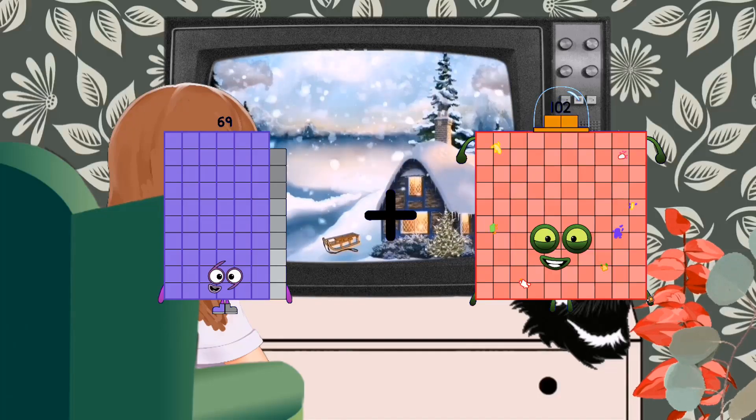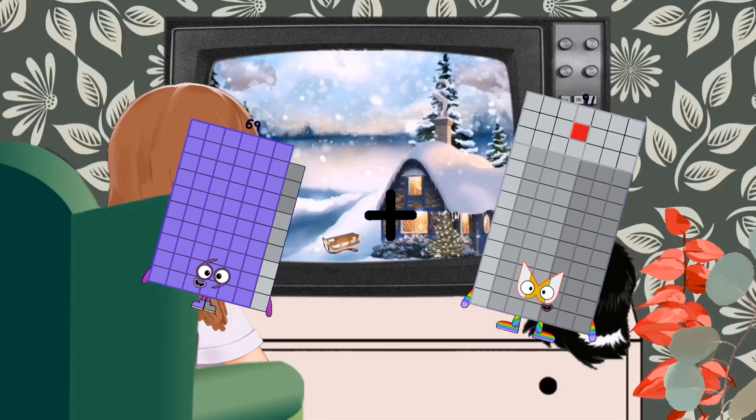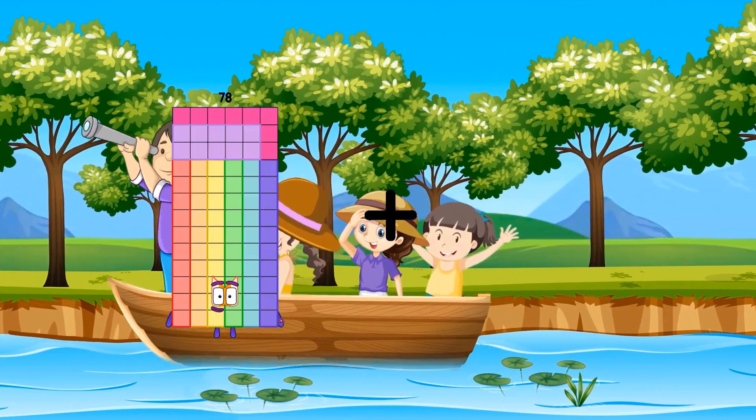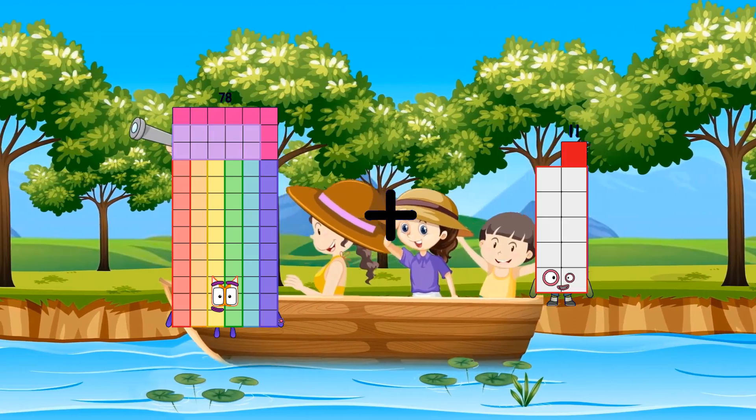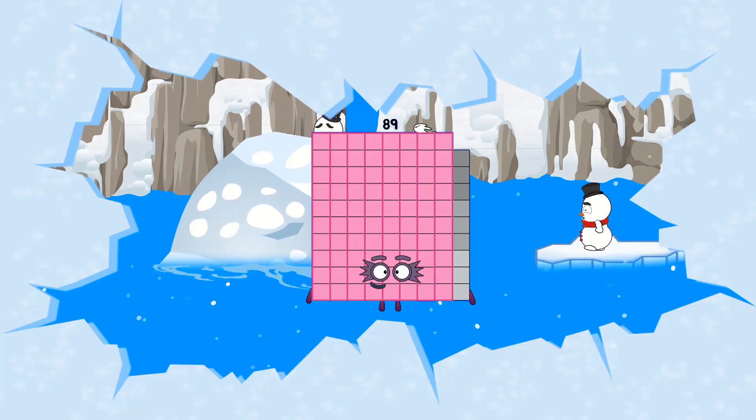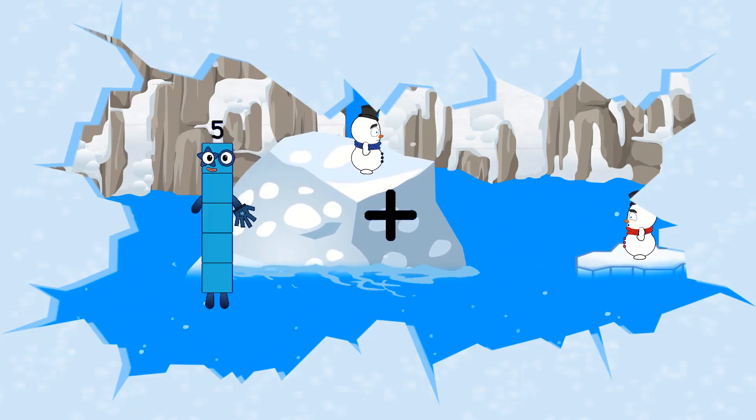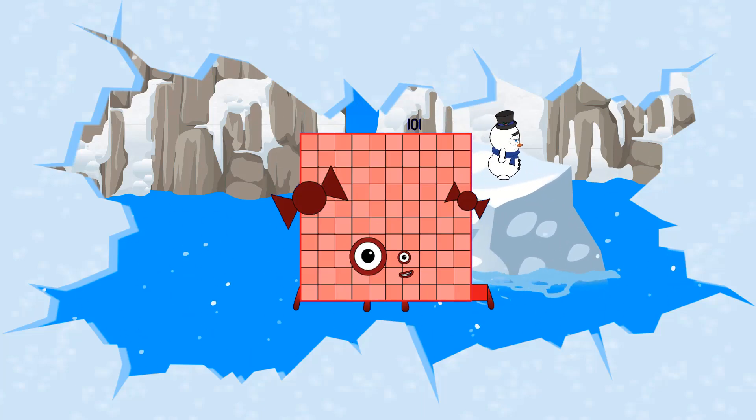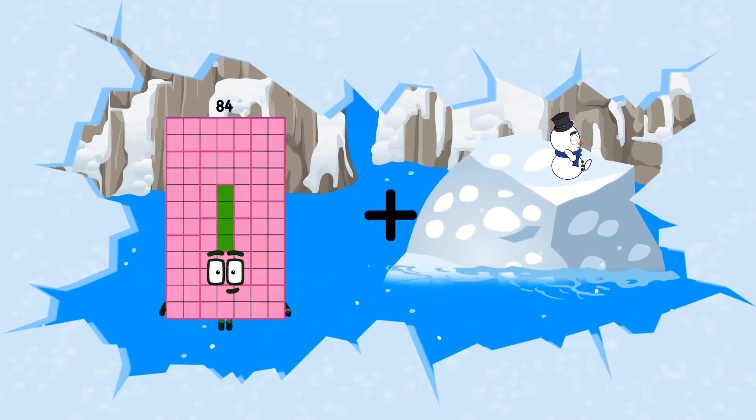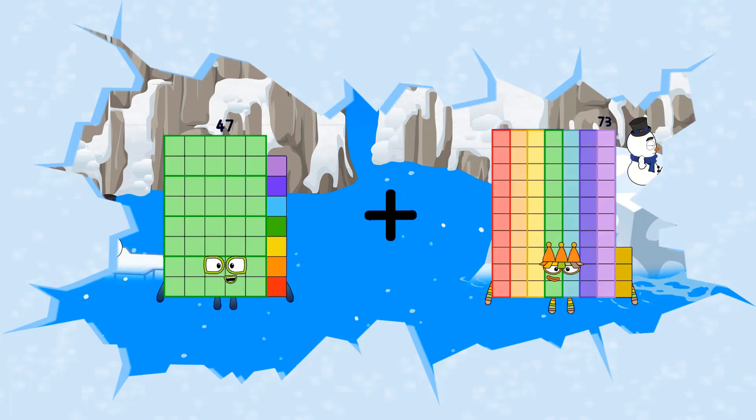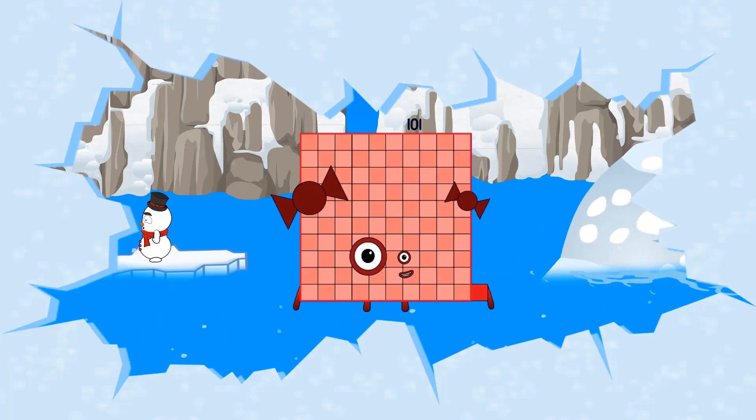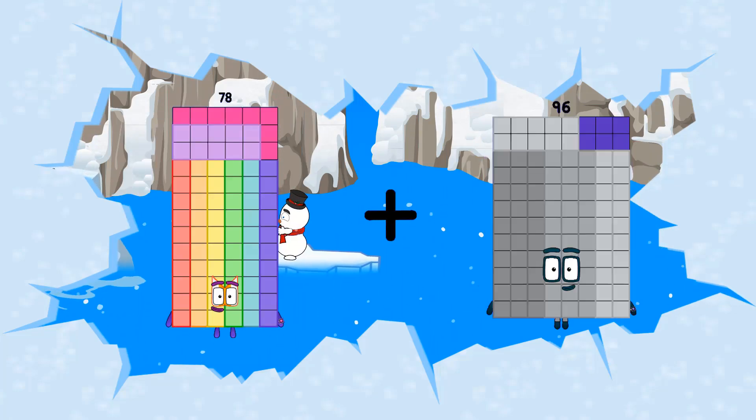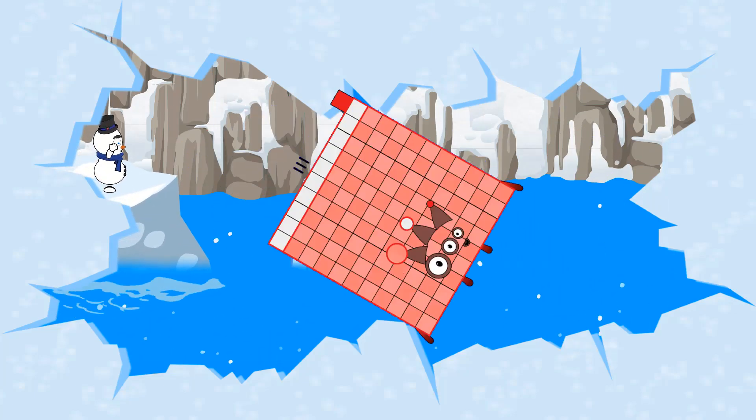69 plus 61 equals 130. 60 plus 11 equals 71. 5 plus 96 equals 101. 47 plus 54 equals 101. 78 plus 33 equals 111.